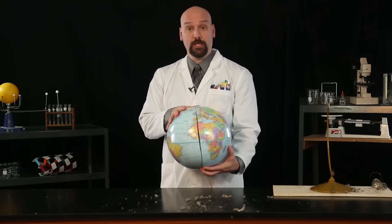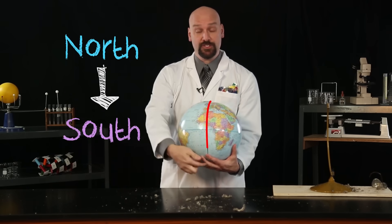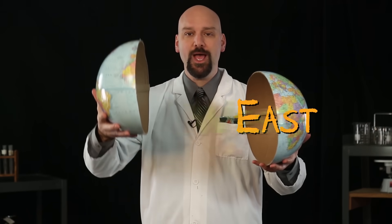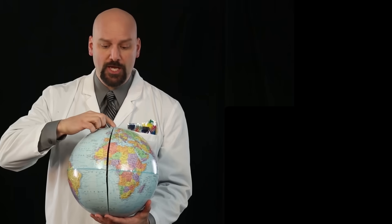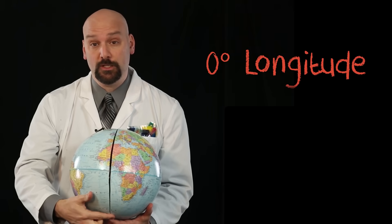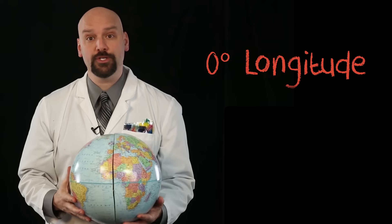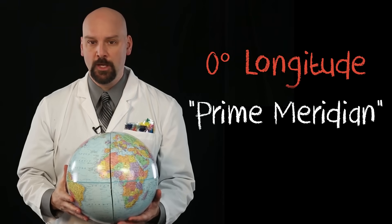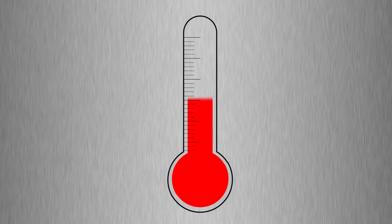You see, longitude lines run north to south, but they separate east and west. To help identify these lines, we number them. This line is zero degrees longitude, also known as the prime meridian.